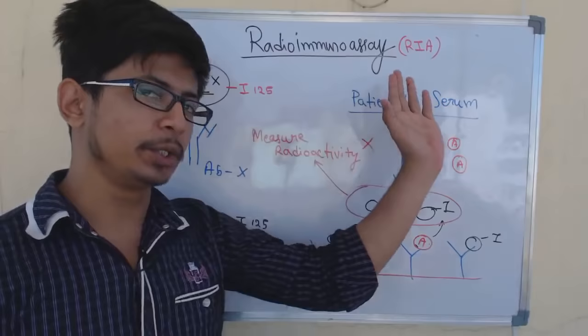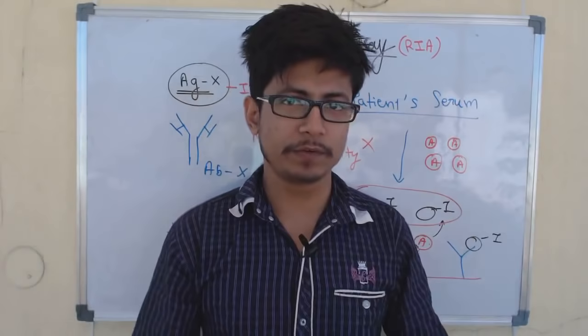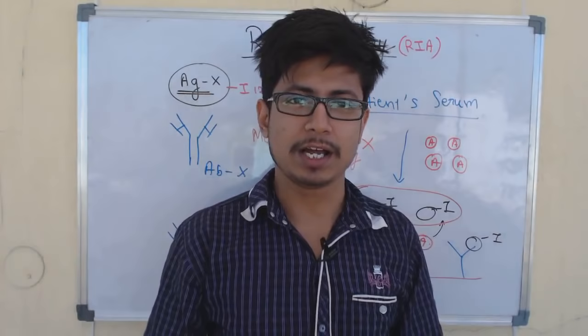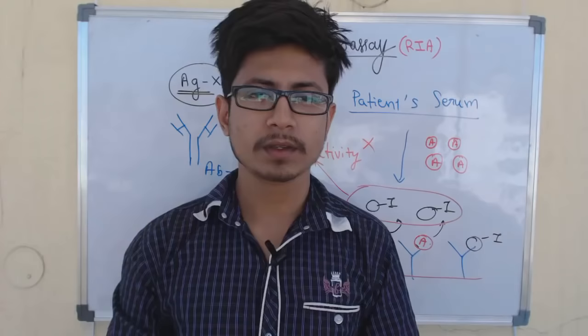So what is radio immunoassay? Radio immunoassay is a type of in vitro assay which involves two different things. As we split the name, 'radio' means it involves the radioisotope, and 'immunoassay' means we use antigen-antibody interactions for this assay.